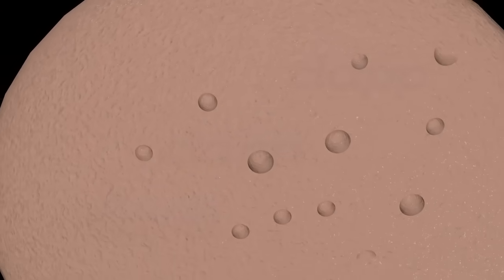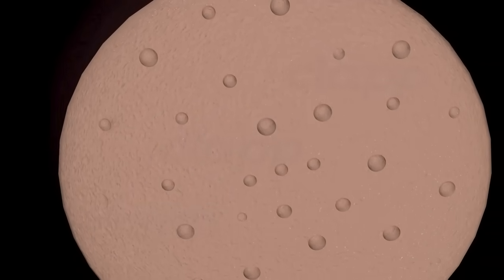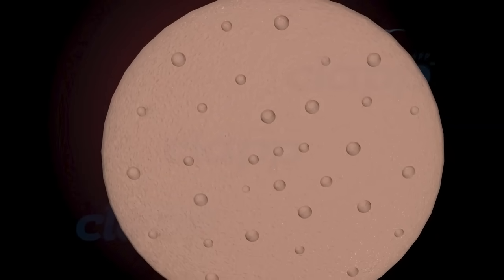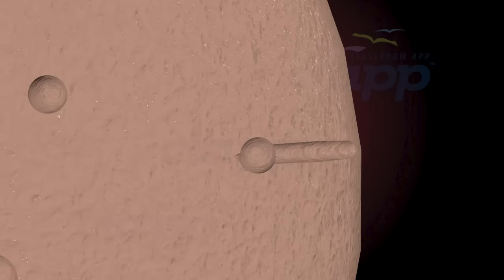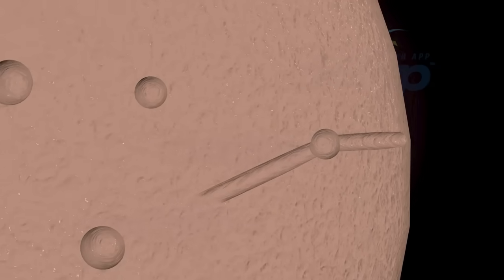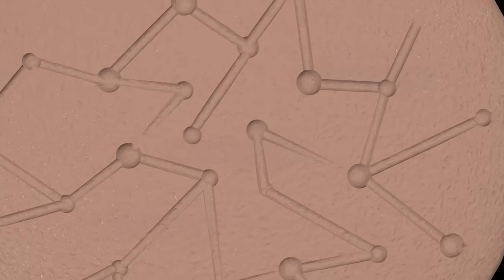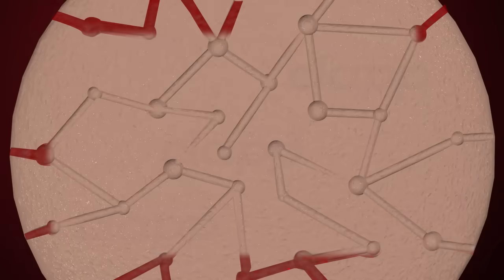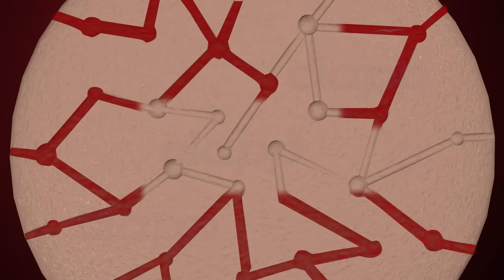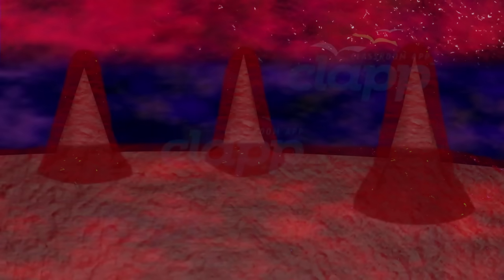Toward the middle of the second week of development, some spaces called lacunae begin to form in the syncytiotrophoblast. These spaces fuse together to form a network filled with maternal blood of the damaged endometrium. Finger-like projections called chorionic villi begin to extend like the roots of a plant and are surrounded by a pool of maternal blood.